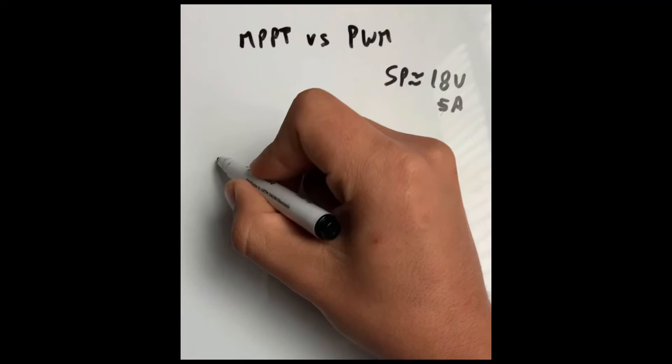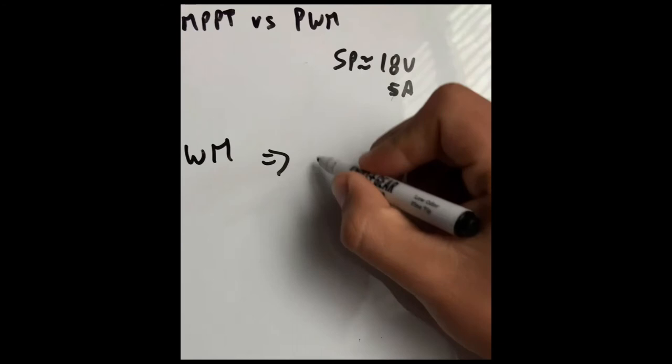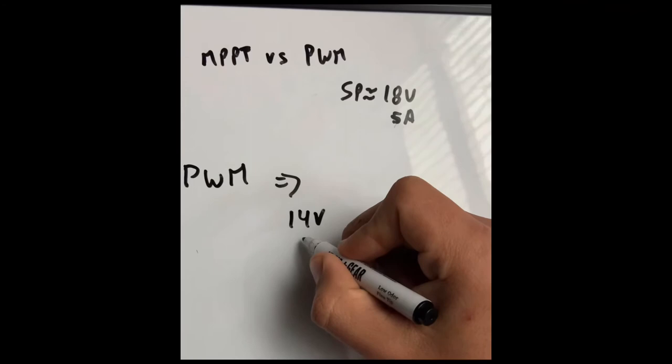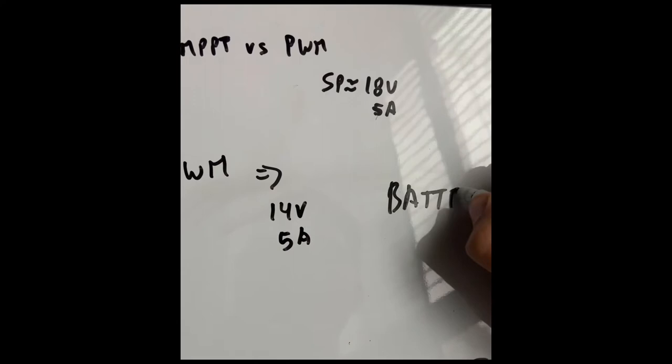For example, if we have a solar panel of 18 volts, 5 amps, PWM will feed the battery only 14 volts and 5 amps. So as you can see, PWM has 4 volts being wasted.